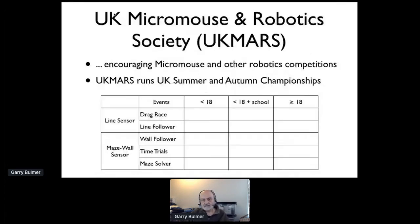Dave has already talked about UK Mars, and we have five basic events: a drag race, line follow around a circuit, and maze events - a wall follower, a time trial which is around a fixed course, or a maze solver where the course changes for each event.